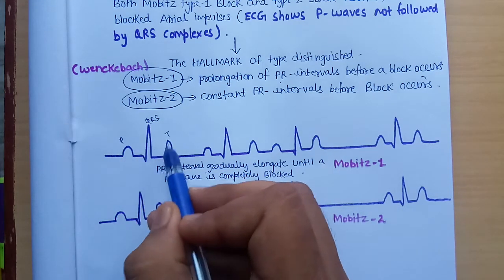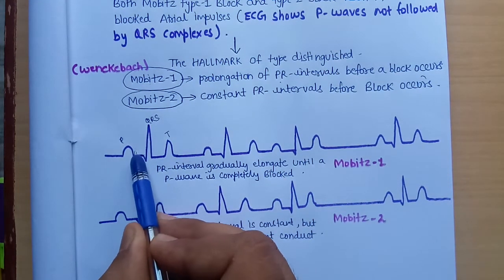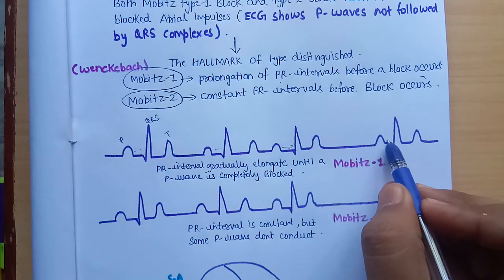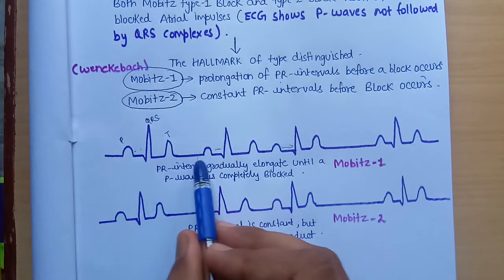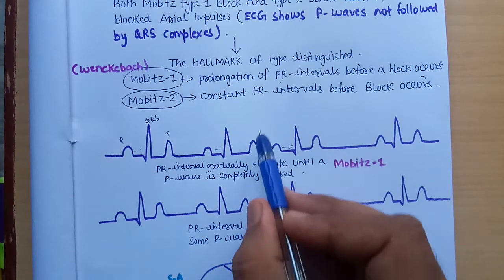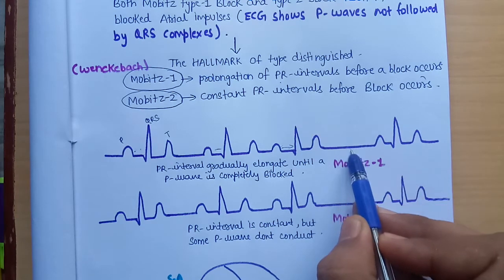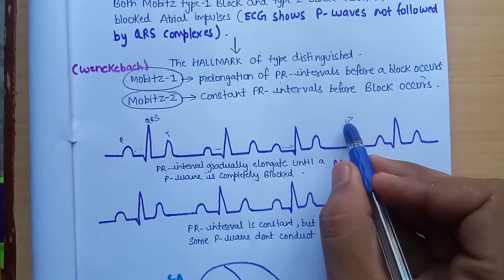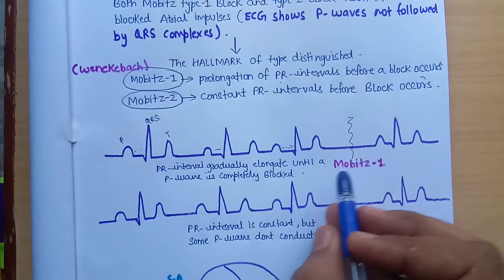All the complexes are quite normal here, but see — this PR interval here, and this PR interval here, and suddenly the QRS complex disappears. We see the gradual elongation of the PR interval, and suddenly the P wave is completely blocked — the impulse is not conducting to the ventricle. The QRS complex suddenly disappears after elongation of the PR interval, which is the characteristic finding of Mobitz type 1.